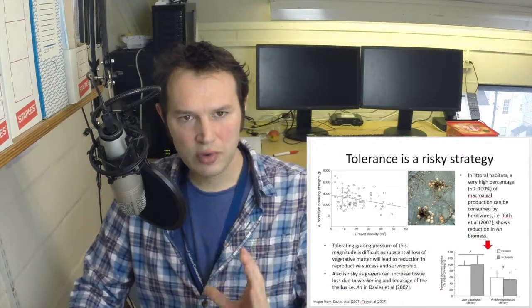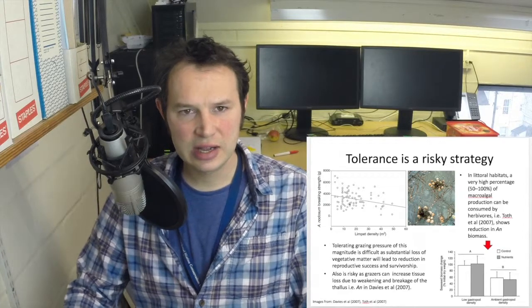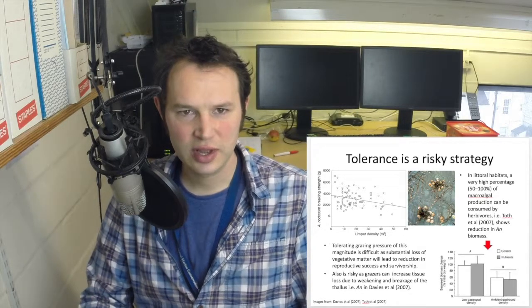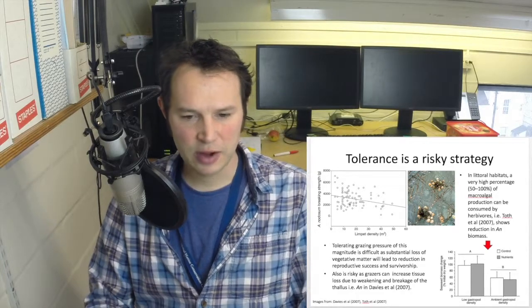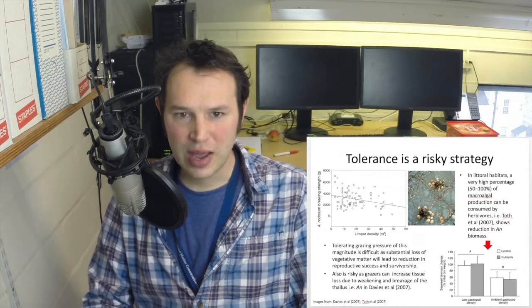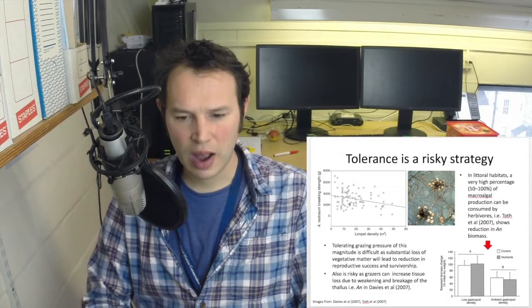Tolerance can be a very risky strategy to undertake because grazers won't remove the least valuable tissues. They will remove any tissue at random. Theoretically they could graze away at the base of the thallus and remove the whole alga, weakening them leading to stochastic loss through wave energy. So it depends on what happens and where the grazers are actually attacking you. Some macroalgae species need to be quite careful with a tolerance strategy, especially those that are long-lived or have high value tissues near the holdfast that are pivotal to the survival of the entire species.